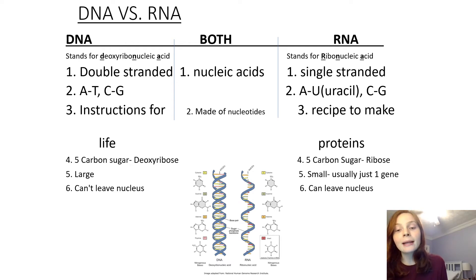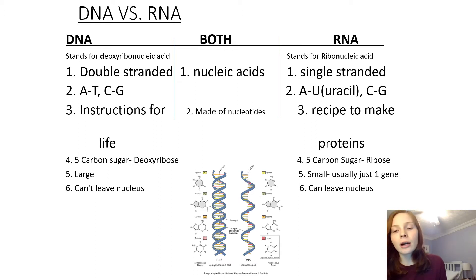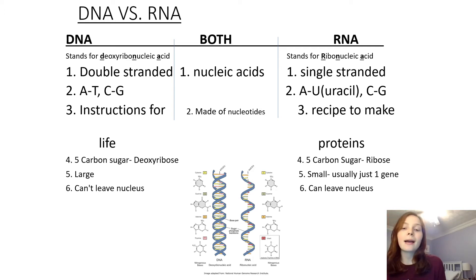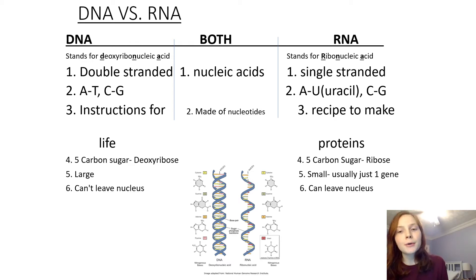The difference is that in RNA there is no thymine. You should never see a T in RNA. Adenine binds with U, which is uracil. That's a really important difference — RNA does not have thymine, it has uracil. And C still binds with G, same as in DNA.